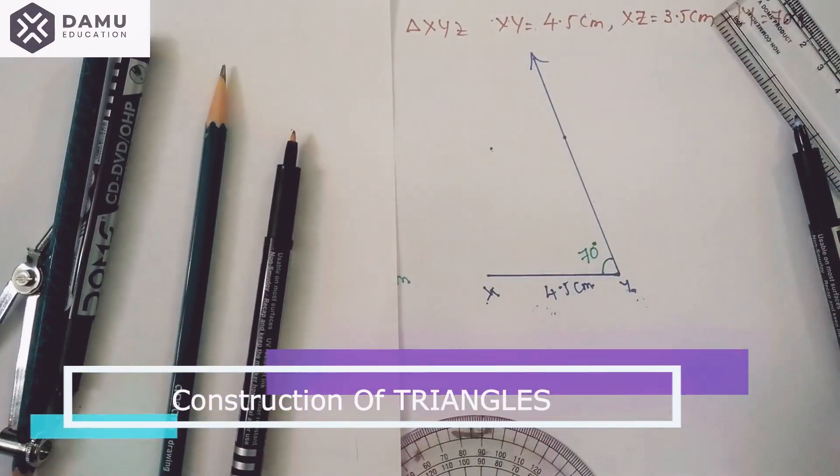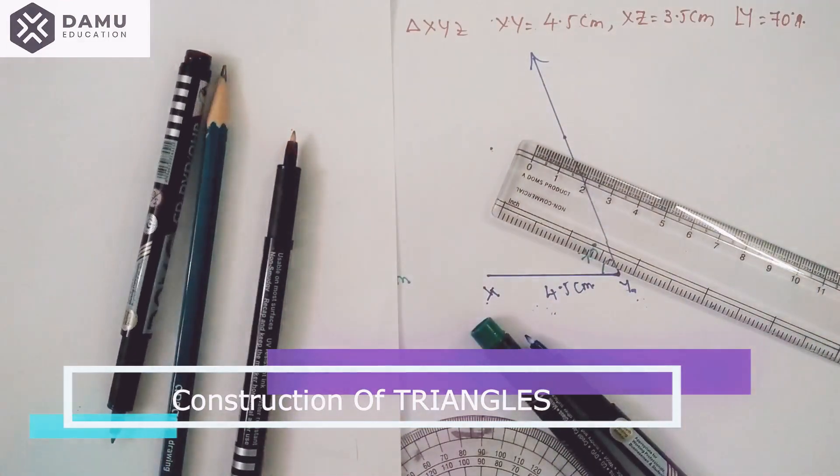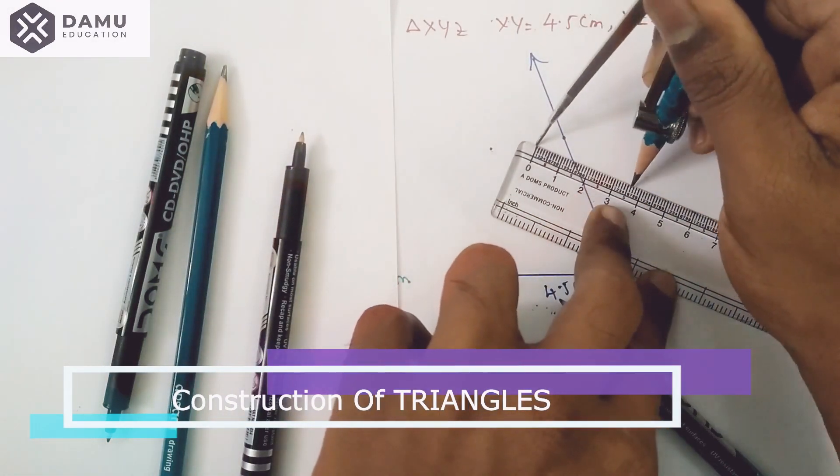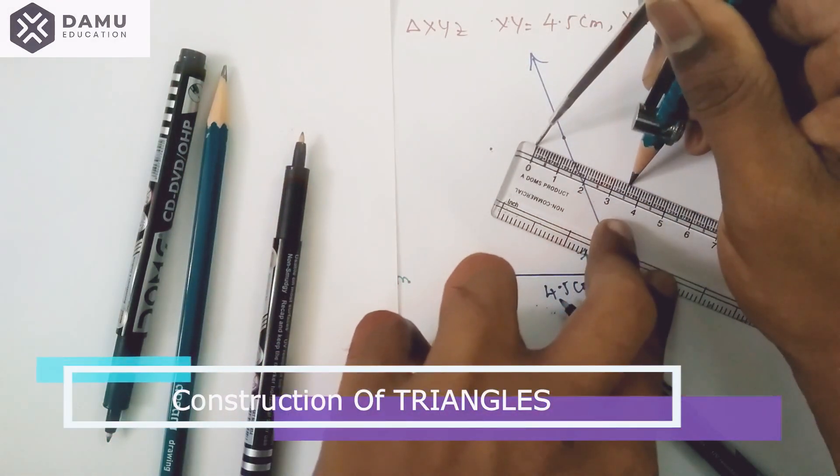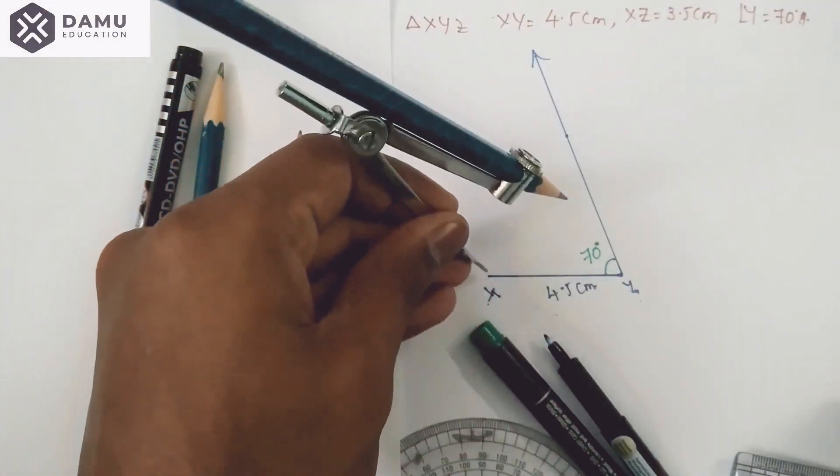Then what we have to find is XZ, which will be equal to 3.5 centimeters. So we need to measure 3.5 centimeters. We are going to draw one arc with X as the center.